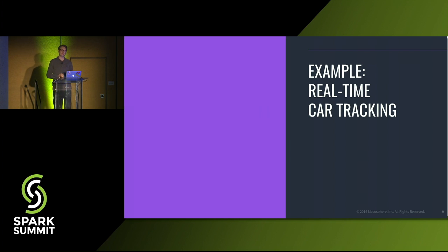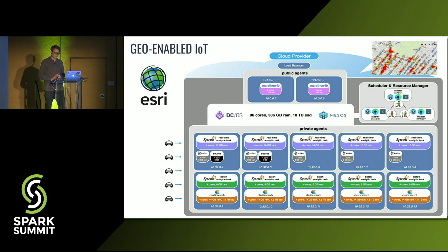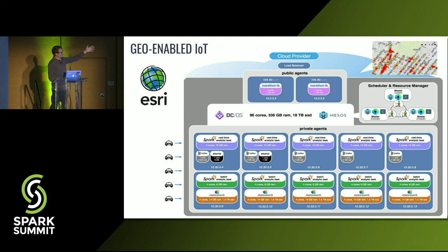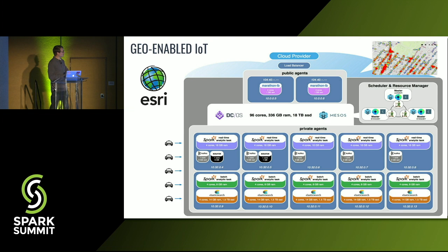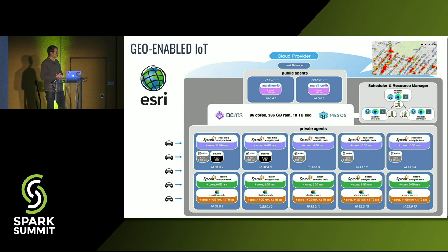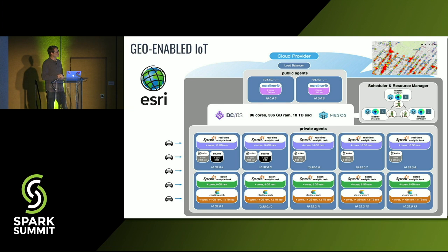Let's talk about the example of building a mapping application — in this case, a real-time car tracking application. The stack looks almost like the SMAC stack. You can see Spark jobs running on every one of those agents doing real-time analytics on incoming events, and also Spark batch analytics jobs running on those same machines. There are Kafka jobs scheduled as the message queue processing all incoming events. Cassandra is not in this example — it's Elasticsearch instead, since all components of the SMAC stack are swappable. All these tasks share the same underlying hosts, driving up utilization, managed via DCOS.